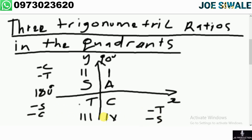The angles in the fourth quadrant go up to 360 degrees, and the angles in the third quadrant go up to 270 degrees.